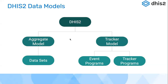Tracker programs, as the name implies, means you're tracking individuals or a respective entity — which could be anything from a person to a household, a village, a lab sample, or a commodity. DHIS2 is generic and flexible enough that you can define the entity you want to track. Tracker programs allow you to track a person over a period of time through different services provided to them.